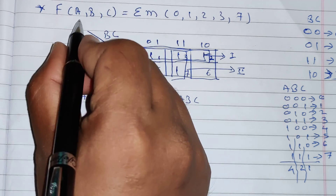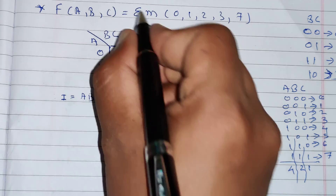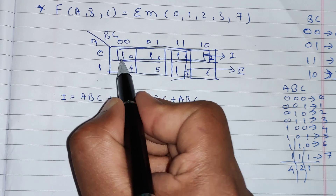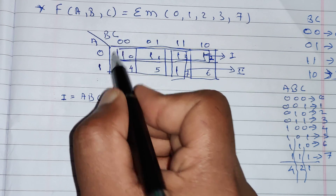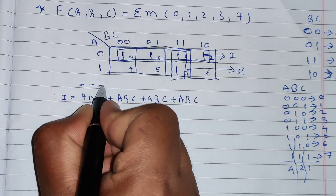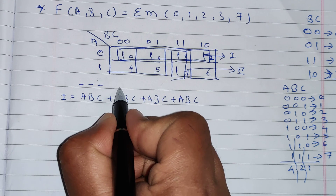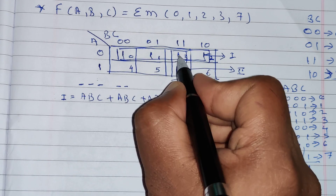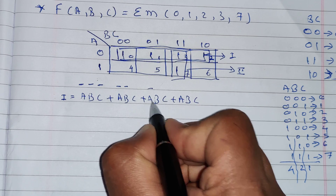We write A, B, C for each term because it is a three variable Kmap, and we use plus because it is a sum of minterms. For the cell 000: A̅B̅C̅. For 001: A̅B̅C. For 011: A̅BC. For 010: A̅BC̅. Whichever variable is 0, we write it with a bar (complement).